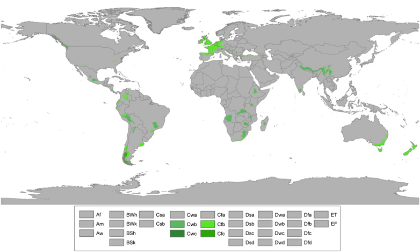Examples of this climate include parts of coastal Iceland and Norway, the Scottish Highlands, the mountains of Vancouver Island and Haida Gwaii in Canada in the Northern Hemisphere, and extreme southern Chile and Argentina in the Southern Hemisphere — examples include Ushuaia and Punta Arenas — the Tasmanian Central Highlands, and parts of New Zealand.